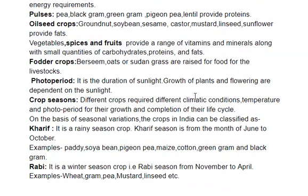If we talk about crop seasons, different crops require different climatic conditions, temperature, and photoperiod for their growth and completion of their life cycle. On the basis of seasonal variations, the crops in India can be classified. Kharif is a rainy season crop — it grows from June to October. For example, paddy, soybean, pigeon pea, maize, cotton, green gram and black gram.